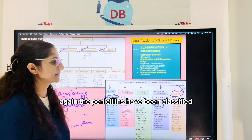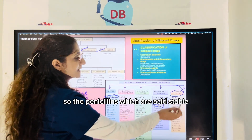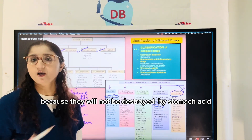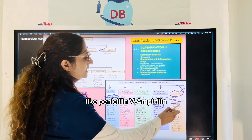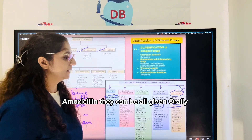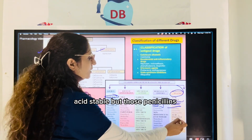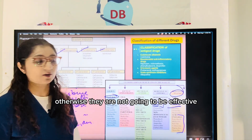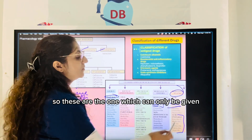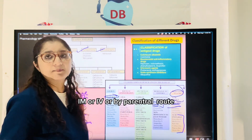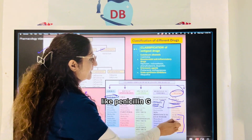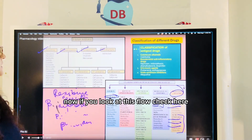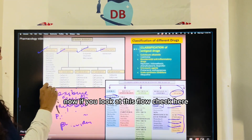As per resistance to acid, penicillins are further classified. Acid-stable penicillins are those which can be given orally because they will not be destroyed by stomach acid — like penicillin V, ampicillin, and amoxicillin. Those penicillins destroyed by stomach acid cannot be given orally, so they are given only by intramuscular or intravenous parenteral routes, like penicillin G and methicillin.